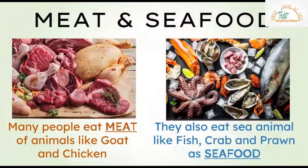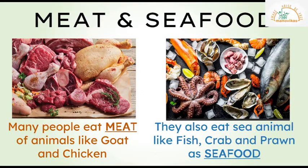Many people eat meat of animals like goat and chicken. They also eat sea animals like fish, crab, and prawn as seafood.